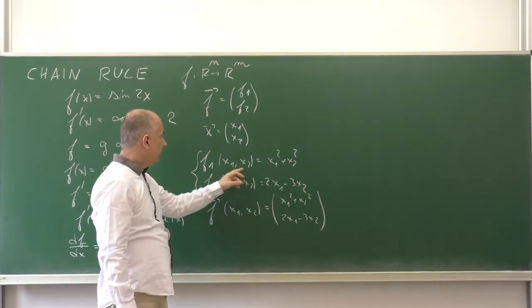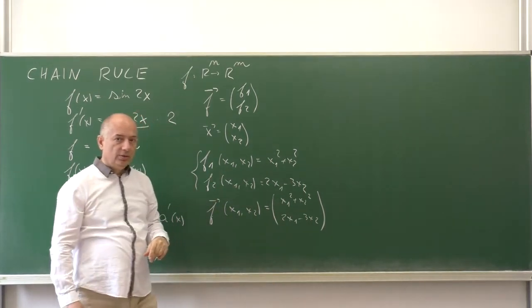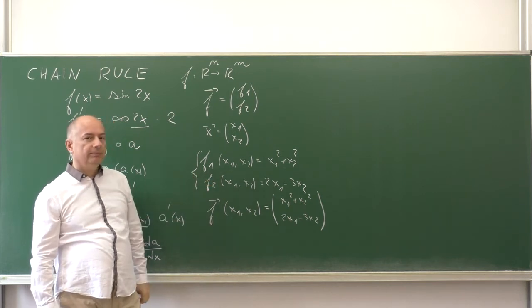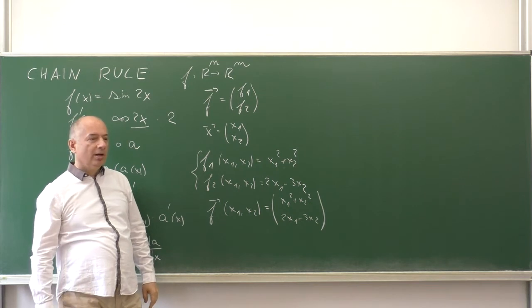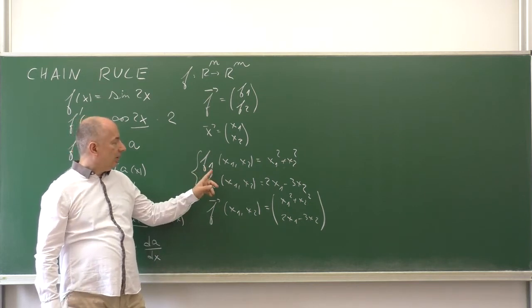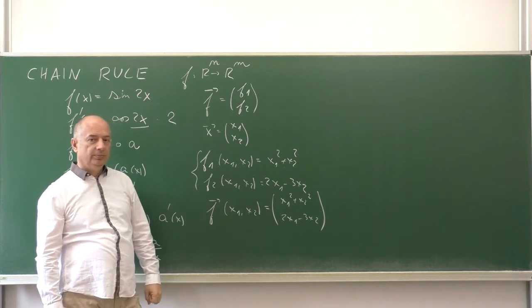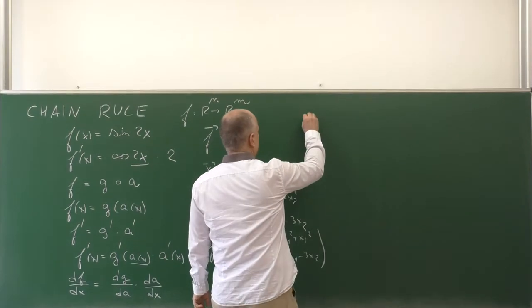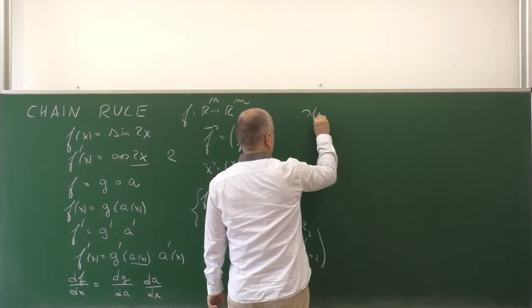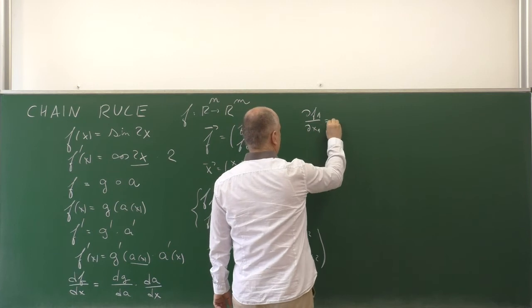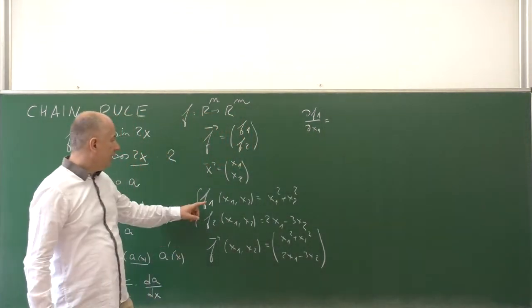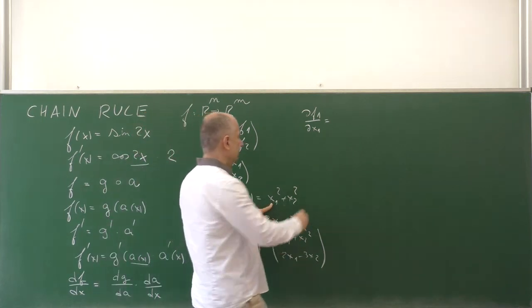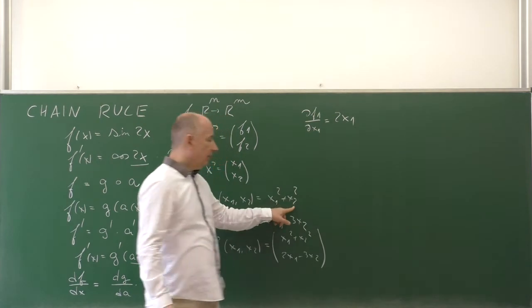So we have two inputs and two outputs. So we have how many first order derivatives, what do you think? Stop for a second and try to answer the question. What will be the number of the first order derivatives? Yes, four. We can consider the derivative of the first function with respect to the first argument. Here is the first function, and the derivative will be 2x₁ + 0.